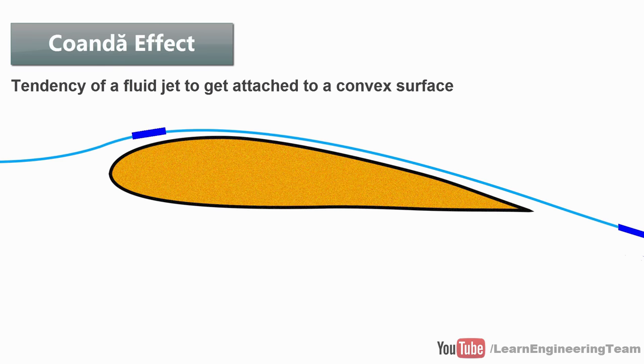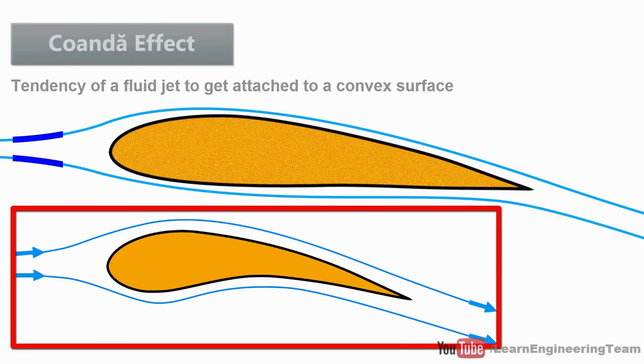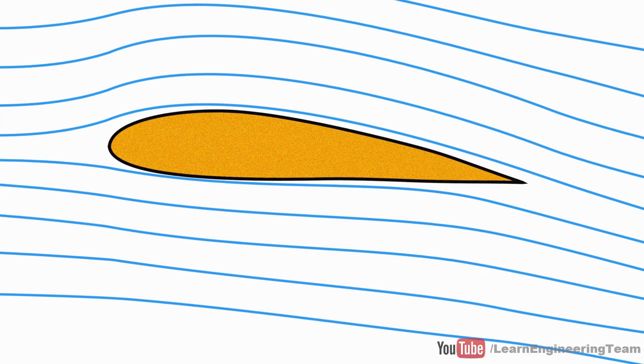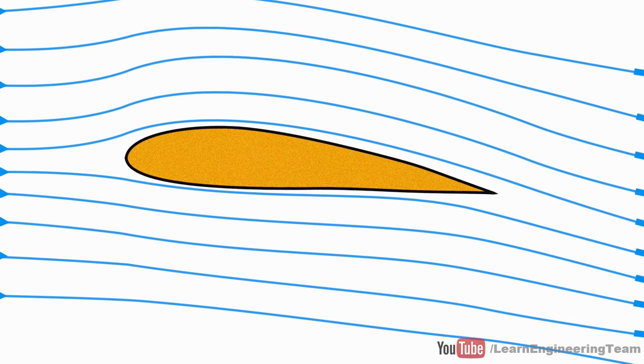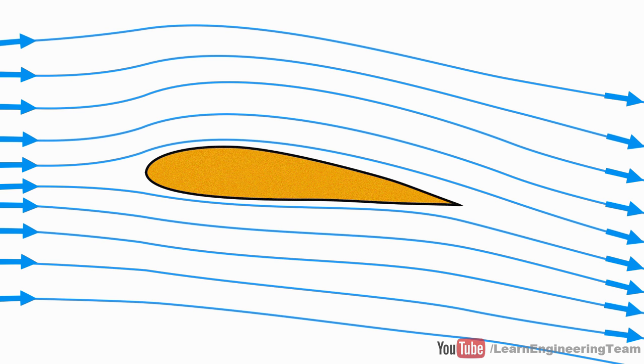The flow gets curved at the bottom of the airfoil as well. A curved bottom surface will make the bottom flow also curved to a greater extent. In short, the introduction of the airfoil makes the flow curved and deflected, and this curved flow is exactly what causes the lift.